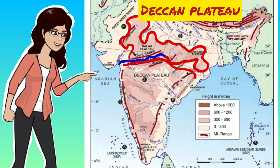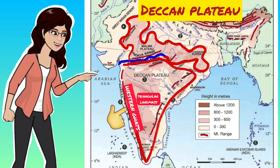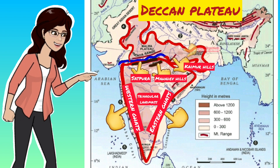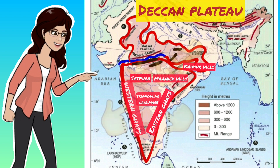It is a triangular land mass, bordered by the Western Ghats in the West, Eastern Ghats in the East, and the Satpura Range, Mahadev Hills, Kaimur Hills and Maikal Range in the North.